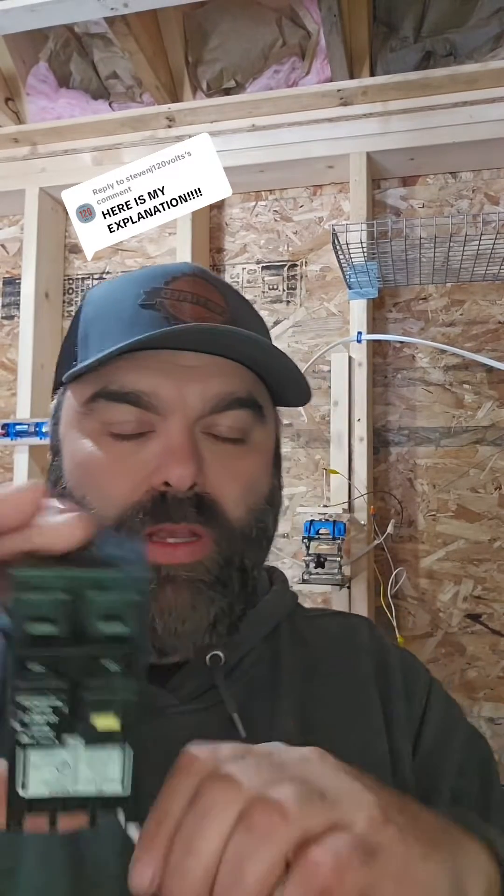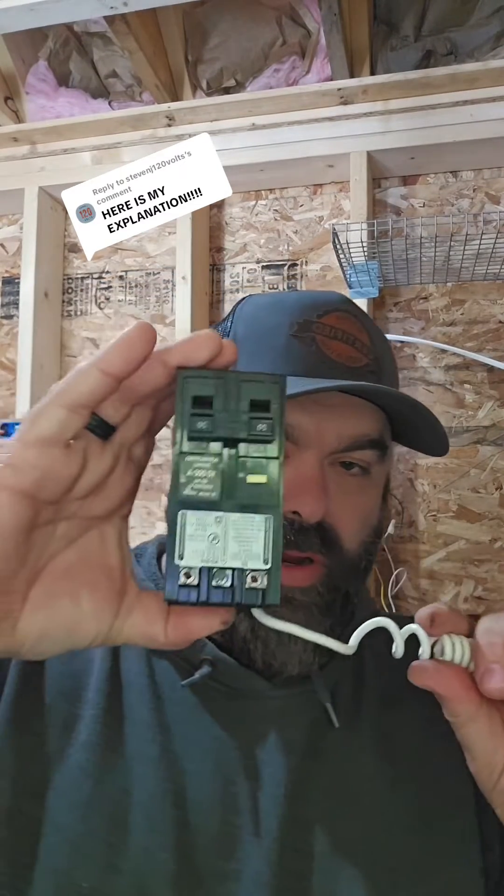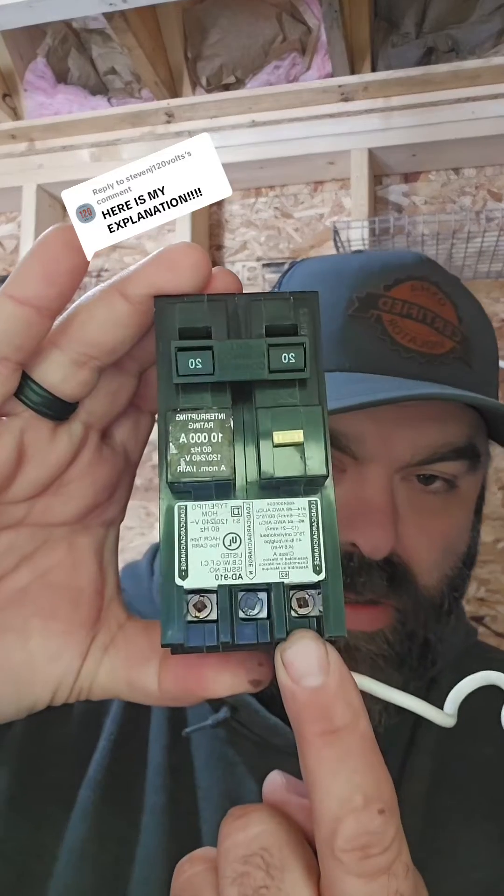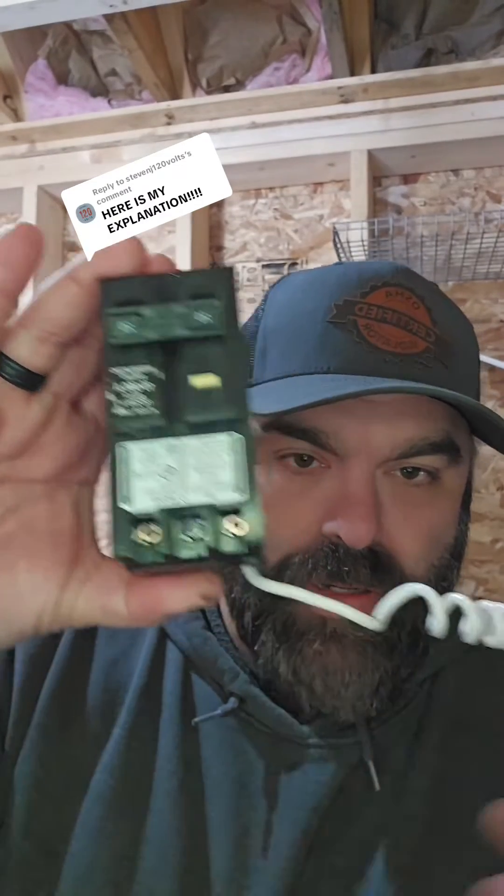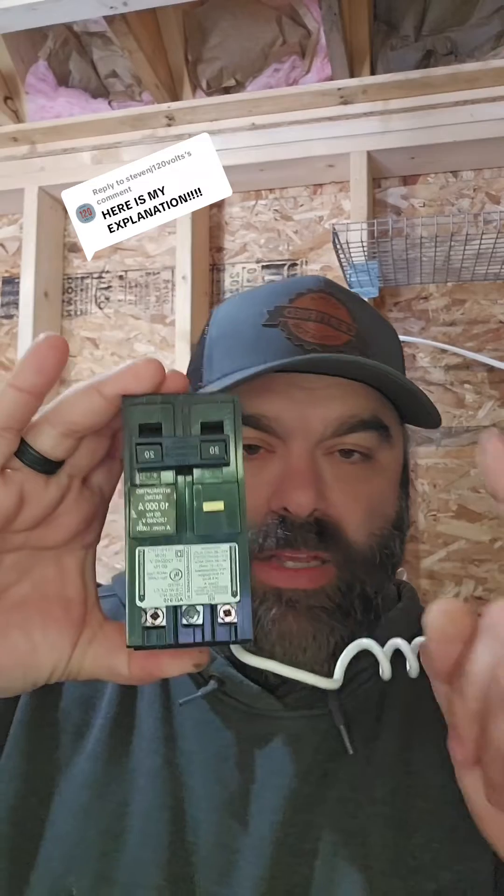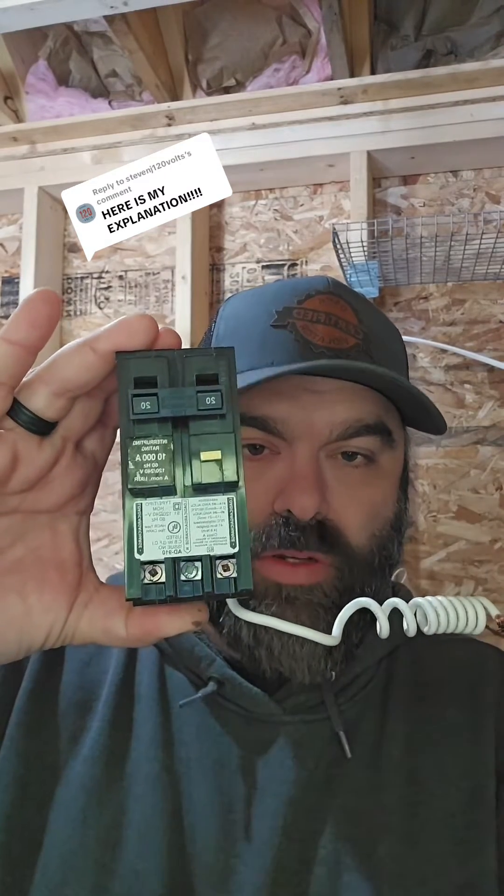And what he's done wrong is when you have a GFI breaker, the hot goes here, the neutral of the circuit goes here, this pigtail goes to the neutral bar. He has run his neutral of the circuit straight to the neutral bar and not back to the breaker. If you want to know why that'd make it trip, let's get into it.